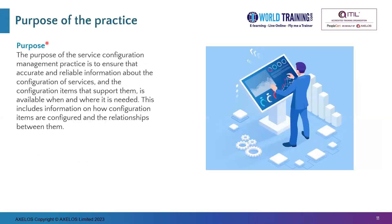We begin with the purpose of the practice. The purpose of the Service Configuration Management practice is to ensure that accurate and reliable information about the configuration of services and the configuration items that support them is available when and where it is needed. This includes information on how configuration items are configured and the relationships between them. This is a very information-intense practice — that information has to be accurate and reliable. It is about the configuration of the services, the way the services are architected, and the relations between the service components, and the information should be up-to-date and reliable.